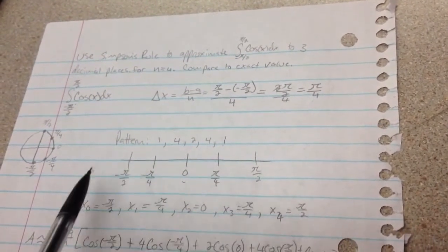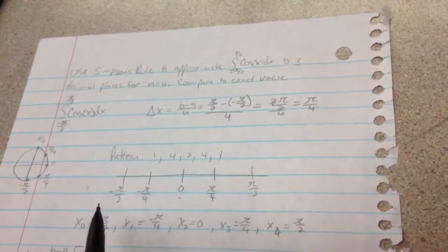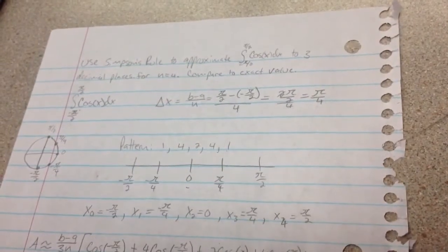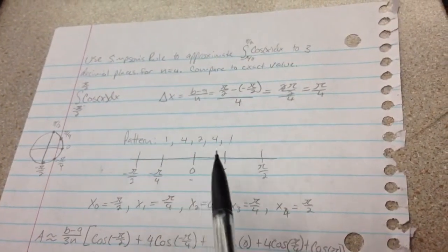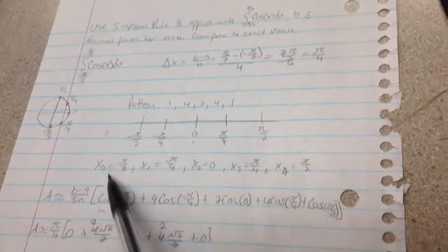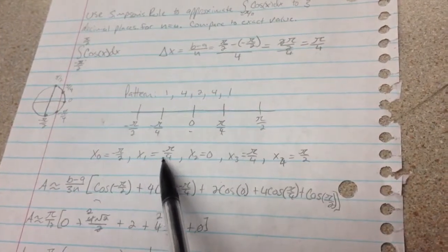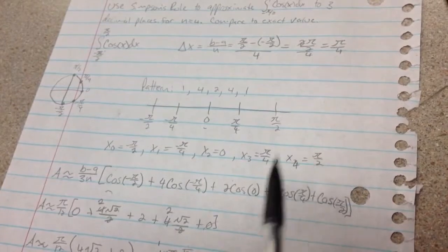And each of these are going to be terms, and we are going to write them in terms of x sub n just for clarity's purposes. So I have those written down here, x subscript 0 is equal to negative pi over 2, x sub 1 is negative pi over 4, and so on all the way through pi over 2.